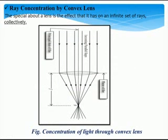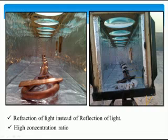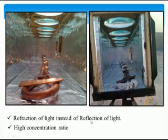The working principle of convex lens solar collector is the reflection of light by using convex lens. We all know that the convex lens concentrates the infinite set of rays to a single point known as focal point, which is at the focal length f from the principal axis of the lens. Hence, I have designed this solar collector with convex lenses at the top and receiver placed at the focal length. And due to the diffraction of light, I got a higher concentration ratio.